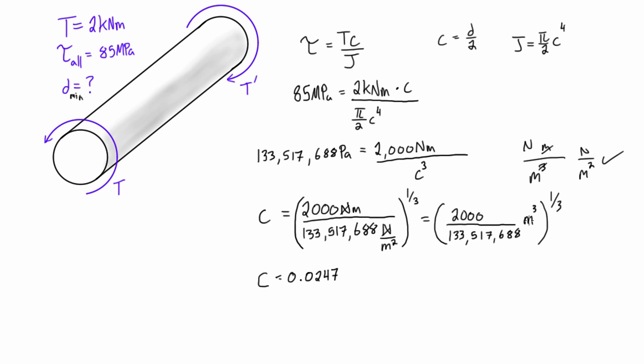And then we take care of the units here: we have meters to the power of three, and we take that to the power of one-third, so we end up with just this number being in meters. And if we want, we can put this into millimeters, it might be a little bit easier for us to see: we have 24.7 millimeters, and that is c. That is the distance here from the center out like that, that is c.